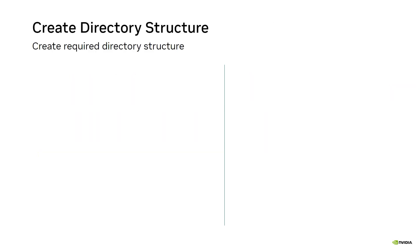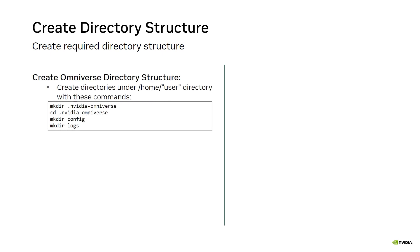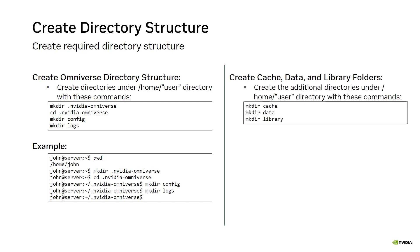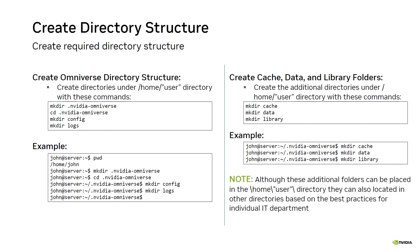Just like Enterprise Nucleus Server, the Enterprise Launcher needs a directory structure to store its data. After opening a terminal session, create the Omniverse directory structure under your user's home directory by running the commands in the first block. Next, create the required cache, data, and library subdirectories using the commands in the second block. Note that although these folders can reside under the user's home directory, due to potential capacity and resiliency constraints they can also be placed in other directories based on your IT department's best practices.